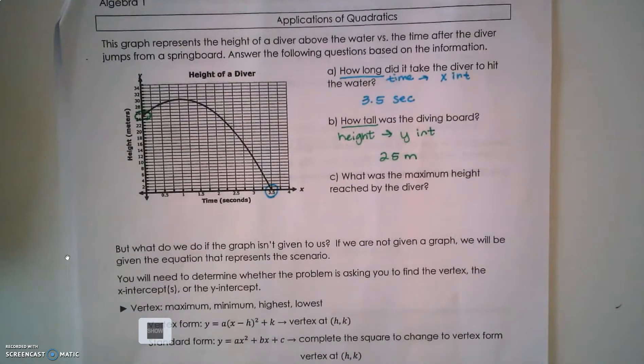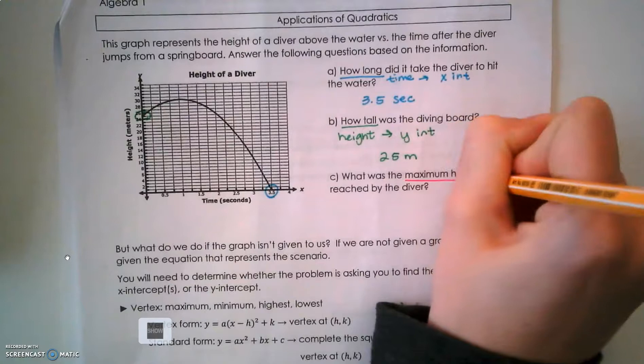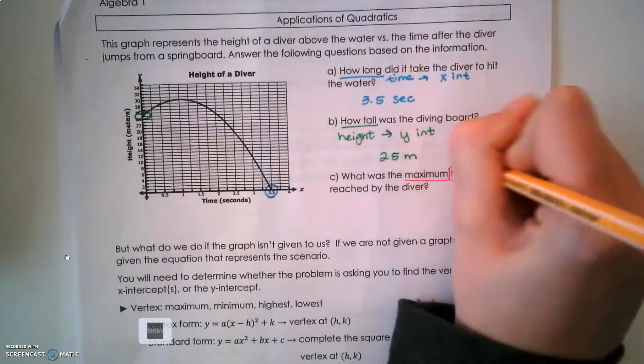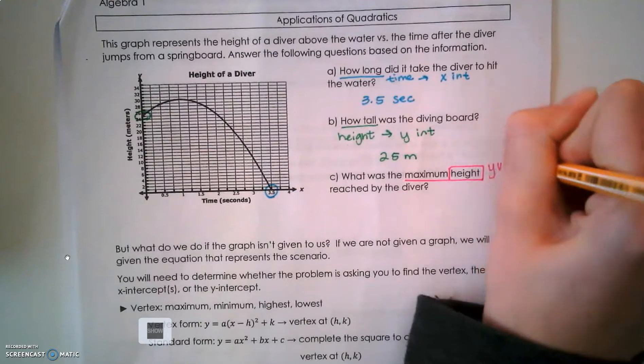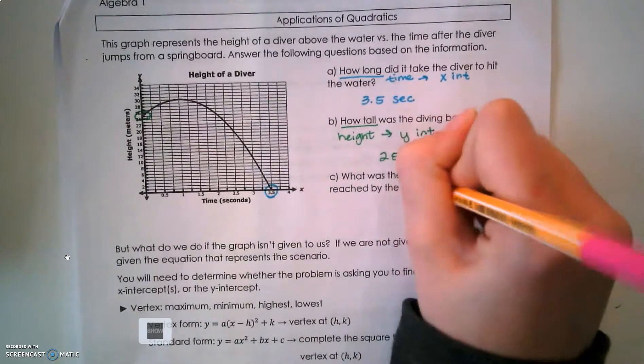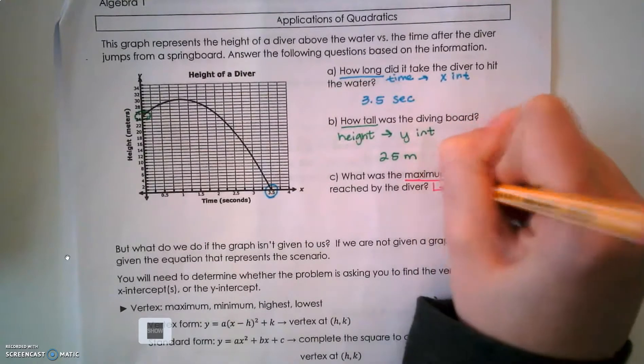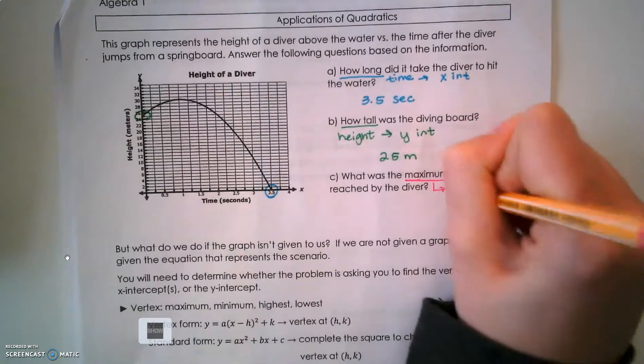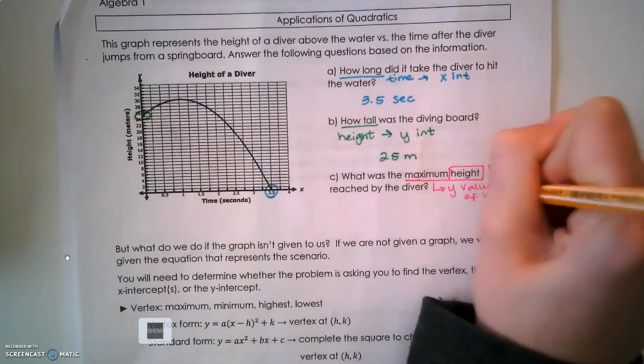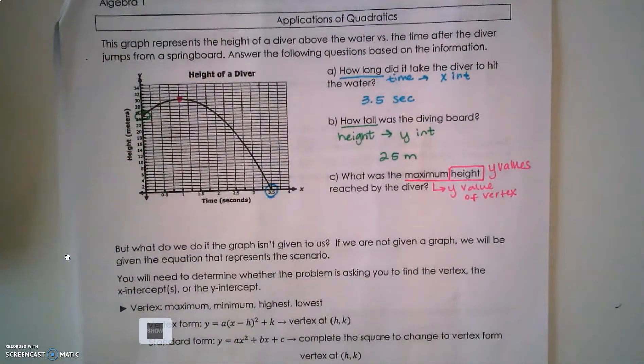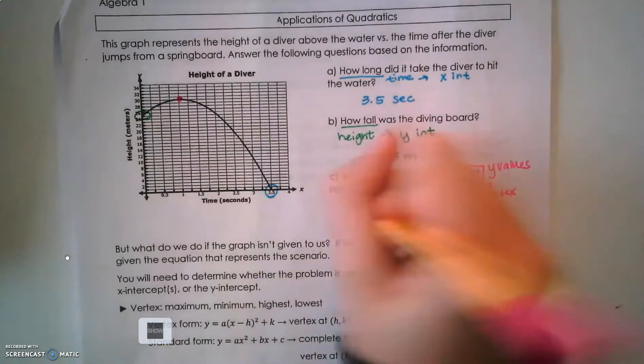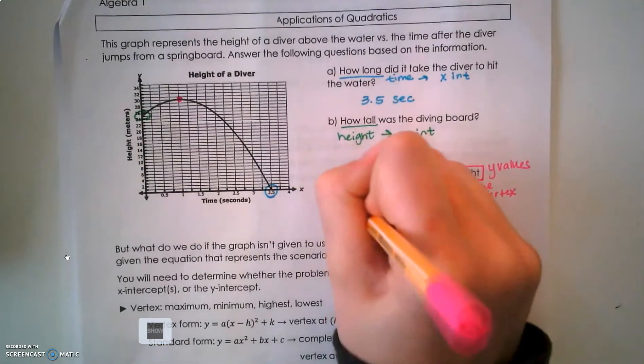What's the maximum height reached by the diver? When we see this word 'height,' we know we're talking about y values, and if it's the maximum, that's going to be the y value of the vertex. I'm going to identify the vertex up here - that's the highest point, and that's at 30 meters.